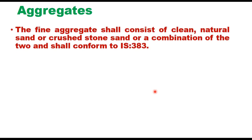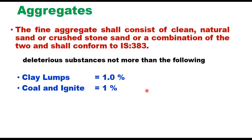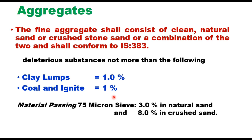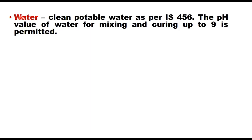Fine aggregate shall be clean natural sand, crushed stone sand, or a combination, conforming to IS 383. Clay lumps should not exceed 1 percent, coal and lignite materials not more than 1 percent, material passing 75 micron sieve not more than 3 percent in natural sand and 8 percent in crushed sand. After combining coarse and fine aggregate, the grading should conform to the table given in the code, ranging from 26.5 mm down to 75 micron.